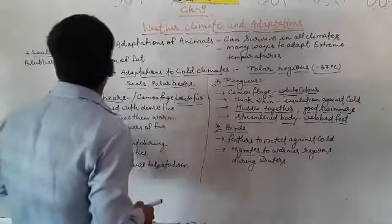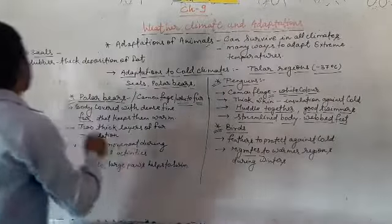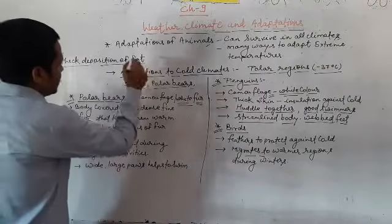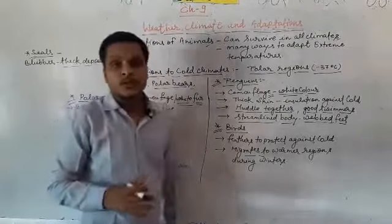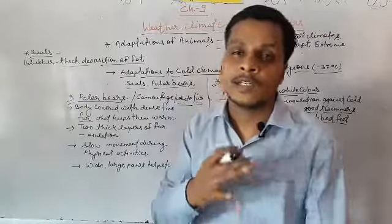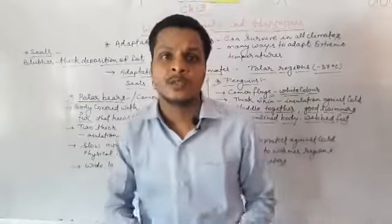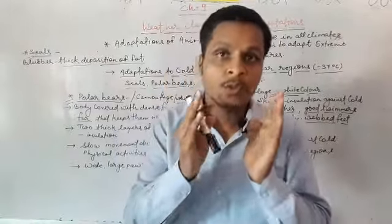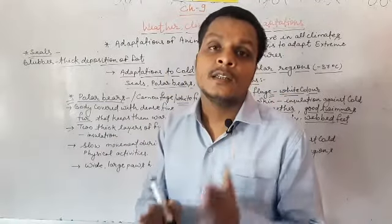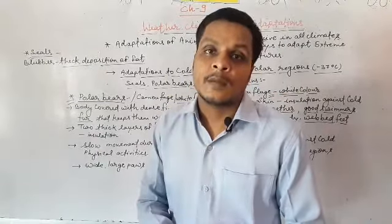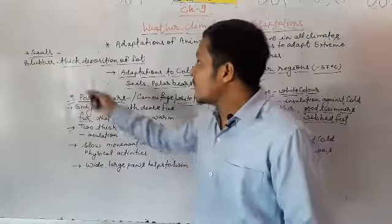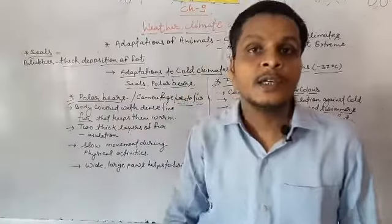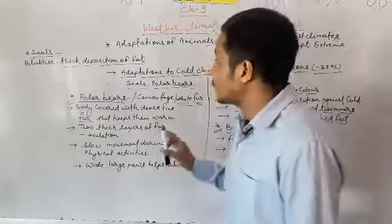One thing remains — that is about seals. Seals have a thick deposition of fat inside their body. A very thick layer of fat keeps their body warm. We call this blubber.